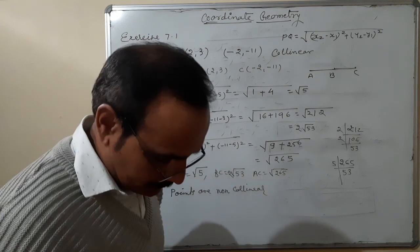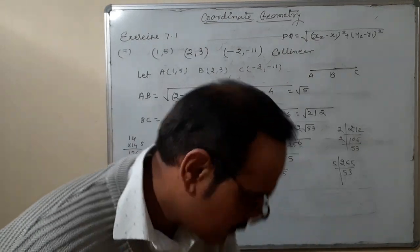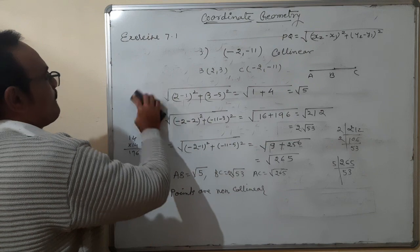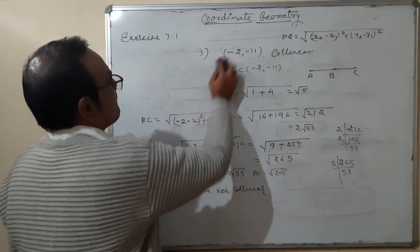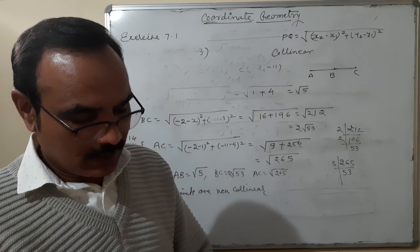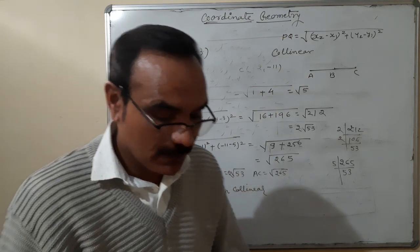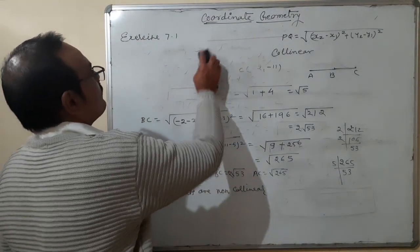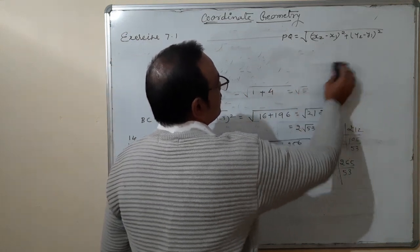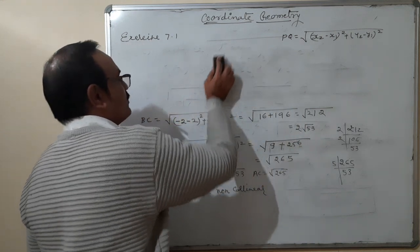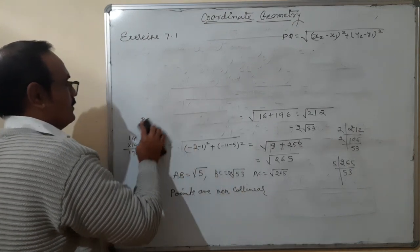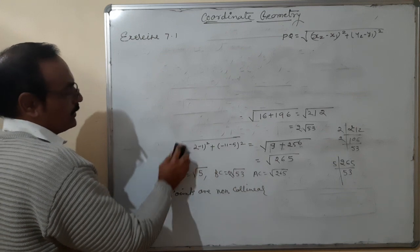Now we are taking question number eight. In the eighth question, four coordinates of a quadrilateral are given and we are going to check whether the quadrilateral is a square, rhombus, rectangle, or parallelogram. Before solving, we should know the properties of these shapes.